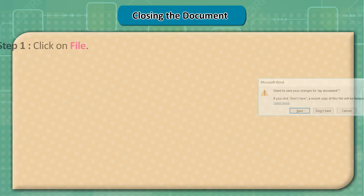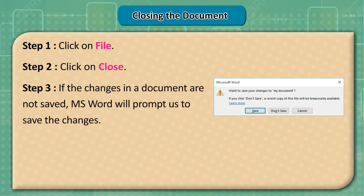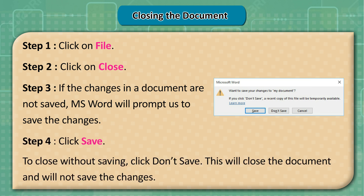Closing the Document: Step 1: Click on File. Step 2: Click on Close. Step 3: If changes in the document are not saved, MS Word will prompt us to save the changes. Step 4: Click Save to save, or click Don't Save to close without saving the changes.